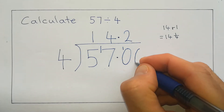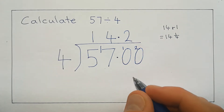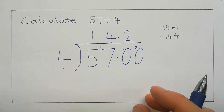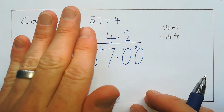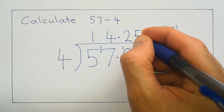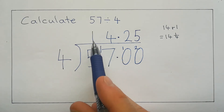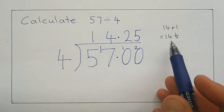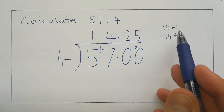So I'm going to do the same again — put an extra 0 and put my 2 here. Now I can say, how many times does 4 go into 20? 4, 8, 12, 16, 20 — that's 5 times, nothing left over, no remainder. So we've got our answer as a decimal: 14.25, which is the same as 14 and a quarter, or 14 remainder 1.